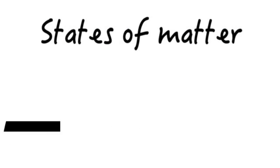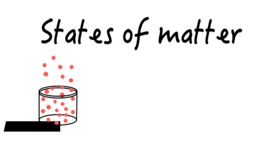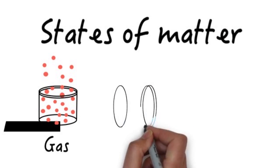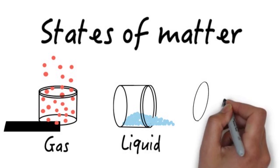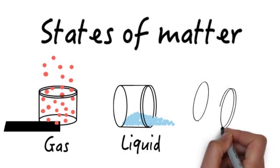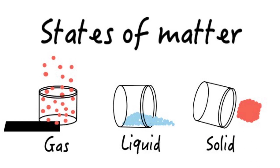Heat energy affects the states of matter. At high temperatures the particles will move faster and spread out, in a gaseous state. At lower temperatures the particles will move more slowly and remain closer to one another, in a liquid state. Finally, at the lowest temperatures the particles become tightly packed to one another and barely move, in a solid state.